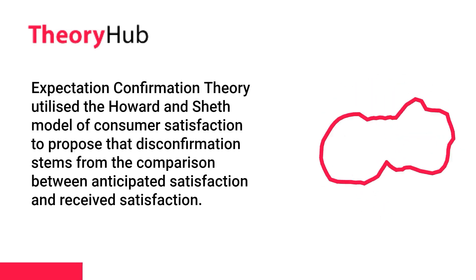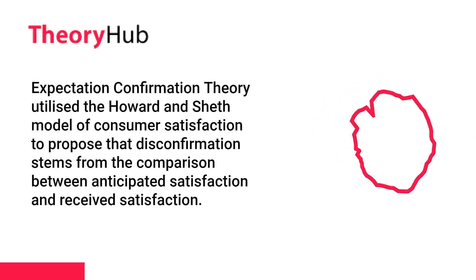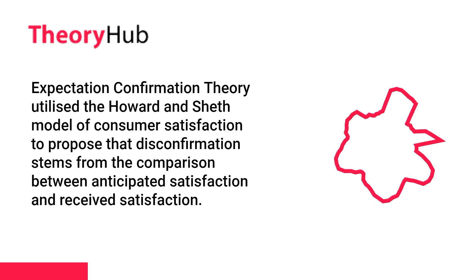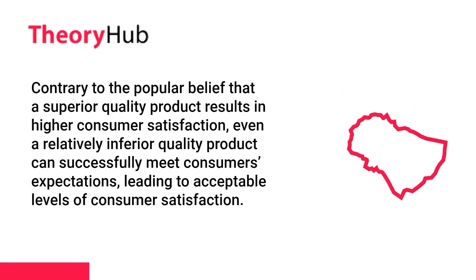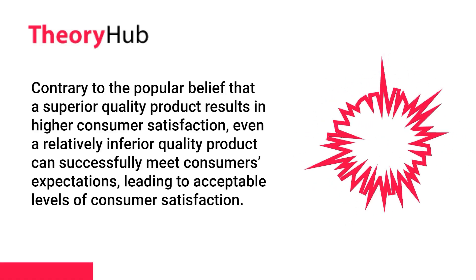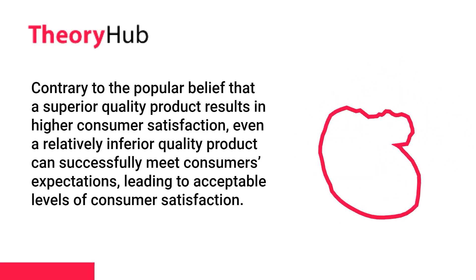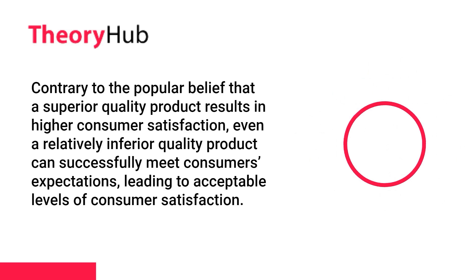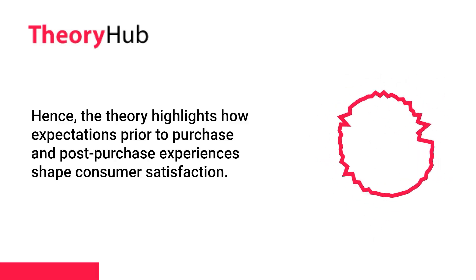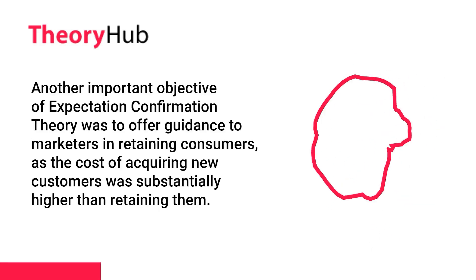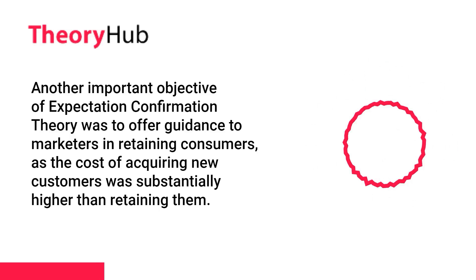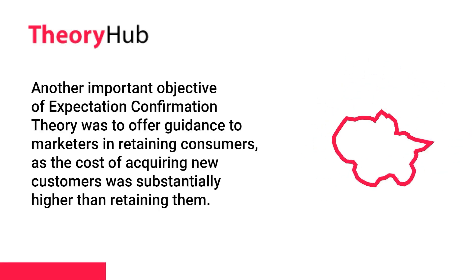Expectation Confirmation Theory utilized the Howard and Sheff model of consumer satisfaction to propose that disconfirmation stems from the comparison between anticipated satisfaction and received satisfaction. Contrary to popular belief, even a relatively inferior quality product can successfully meet consumers' expectations, leading to acceptable levels of satisfaction. Hence, the theory highlights how expectations prior to purchase and post-purchase experiences shape consumer satisfaction. Another important objective was to offer guidance to marketers in retaining consumers, as the cost of acquiring new customers was substantially higher than retaining them.